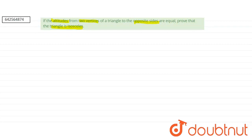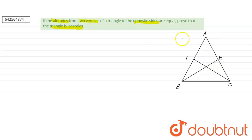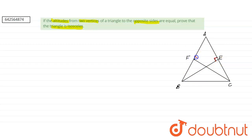This is the triangle given to us — triangle ABC. From two vertices, B and C, there is an altitude drawn to the opposite side. That means the angles at the feet of the altitudes are 90 degrees. So we have this as 90 degrees and this as 90 degrees.